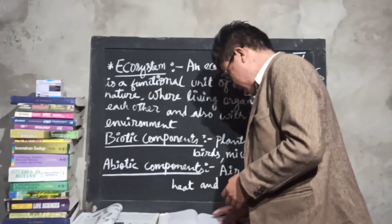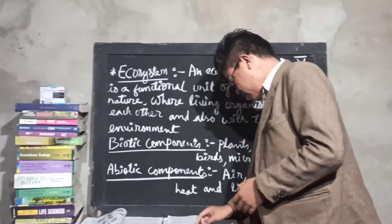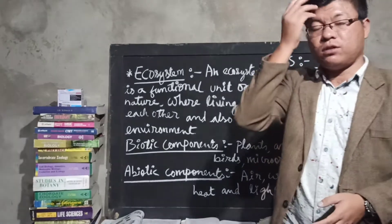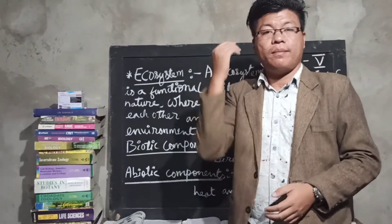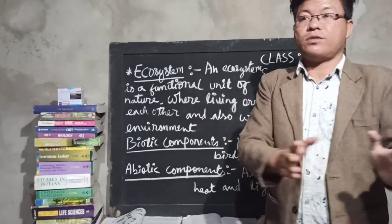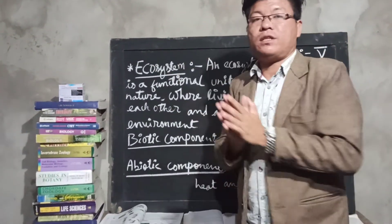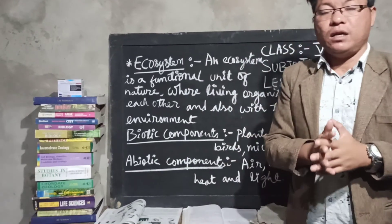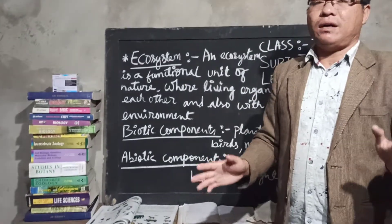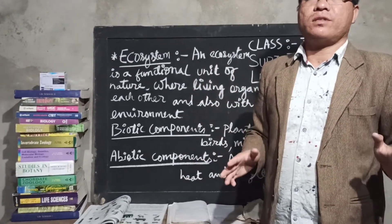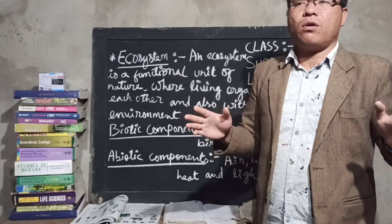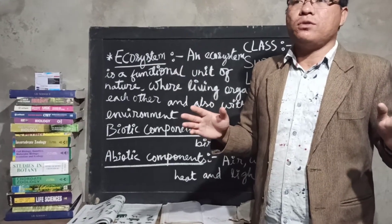You will find freshwater ecosystem and the solar ecosystem as well. These are the types found within the aquatic category.